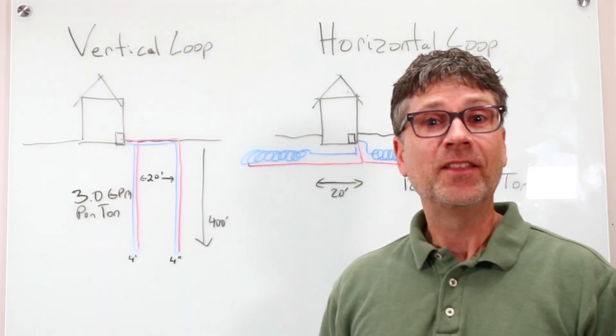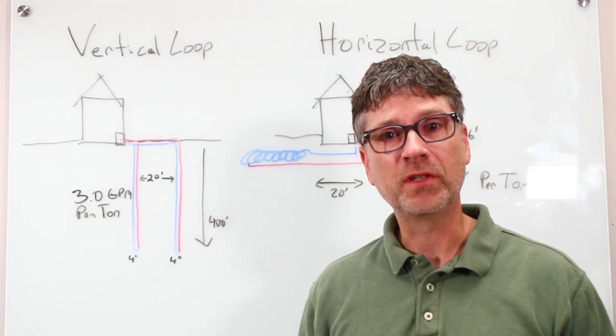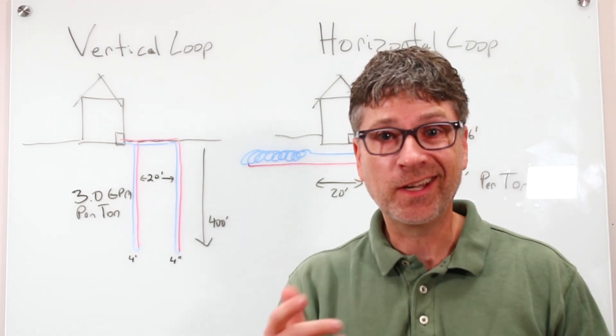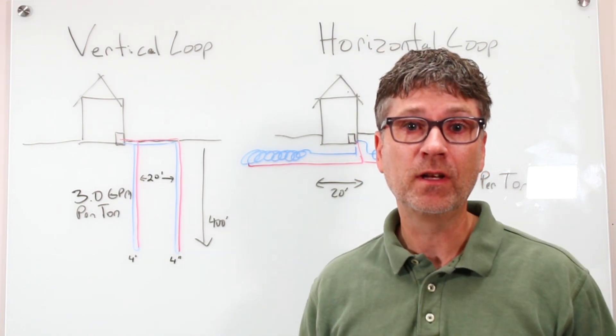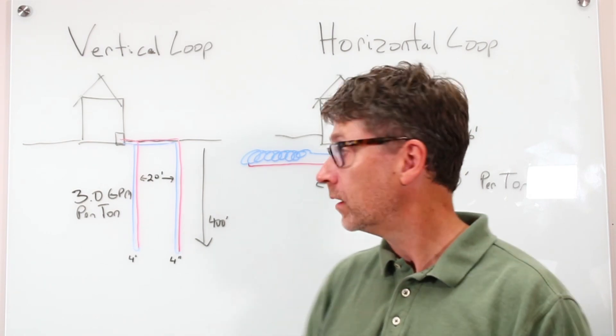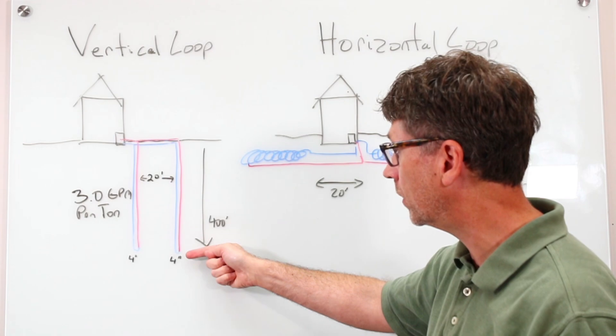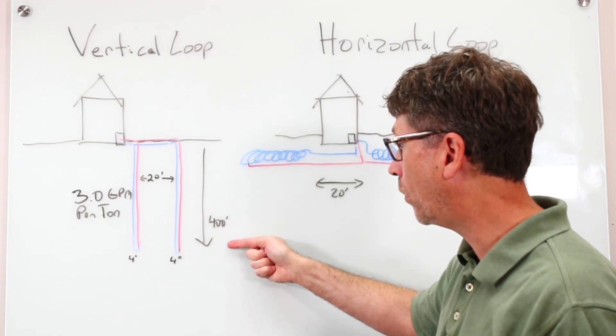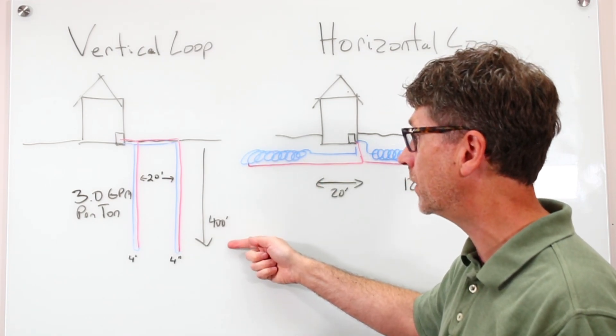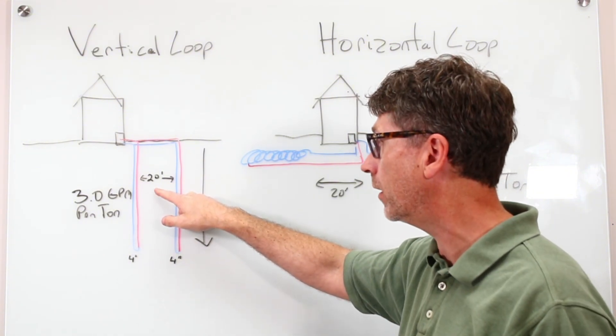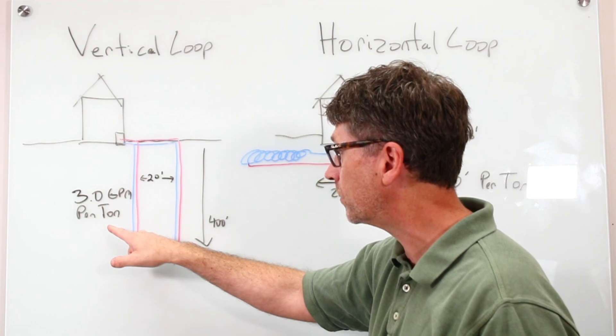There are four main types of loops used in geothermal systems. First, we have vertical loops, like in the case that we just discussed. For a vertical loop, you have a four-inch wide hole that is drilled down into the ground. 400 feet is about how deep you want to make these. Each of the loops should be at least 20 feet apart, and you're looking for about three gallons per minute per ton in terms of water flow.